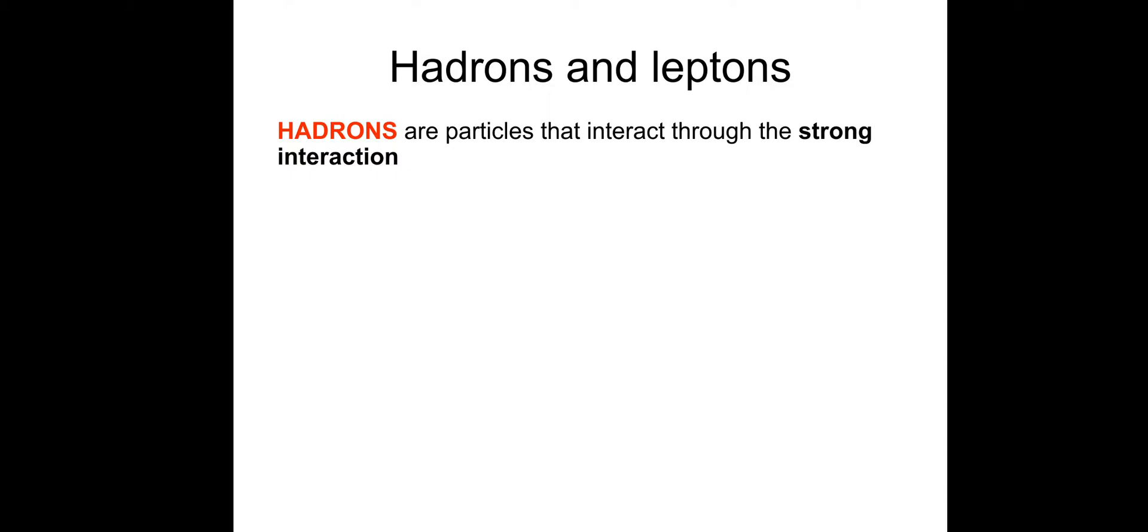Hadrons are particles that interact through the strong interaction. Some examples of Hadrons are protons, neutrons, pions and kaons. The pions and kaons belong to a small subgroup, we'll talk about that later.